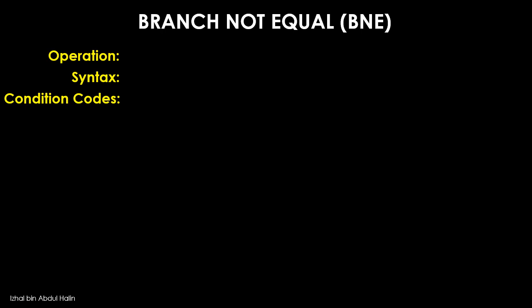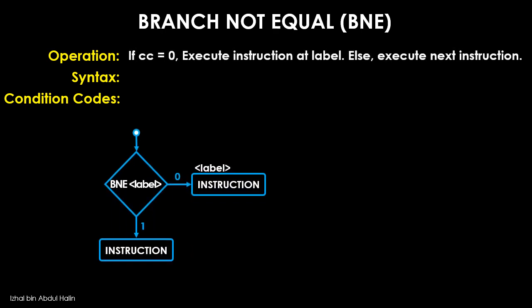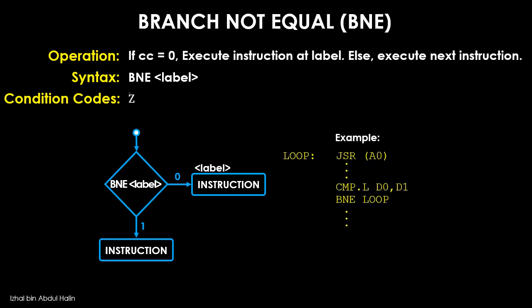The BNE instruction initiates a branch if the condition code is zero; it will not branch otherwise. The general syntax is: BNE label. The condition code is only Z-bar. Here is an example of how the BNE instruction is used — let's pretend this code is part of a big fancy program.